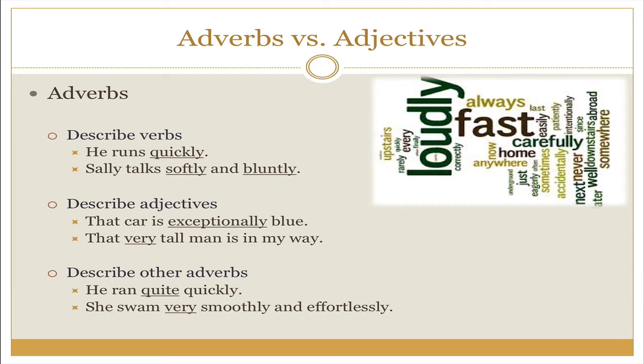Another use of adverbs is to describe adjectives. That car is exceptionally blue. Car is our noun, blue is an adjective, and exceptionally is telling us how blue it is — really blue, exceptionally blue. Adverbs can also describe other adverbs. He ran quite quickly. How did he run? Quickly. How quickly? Quite quickly. So quickly serves as an adverb because it's telling us how he ran, and then quite is also telling us how quickly he was running.